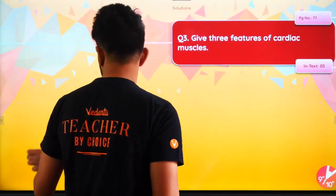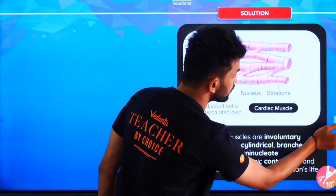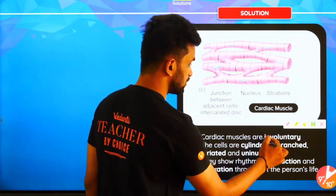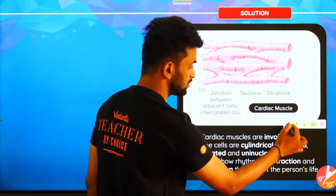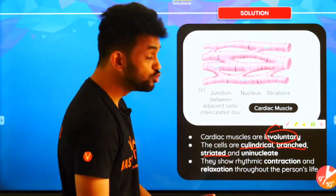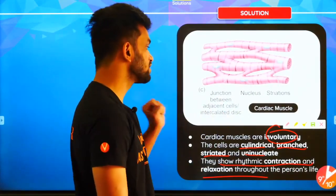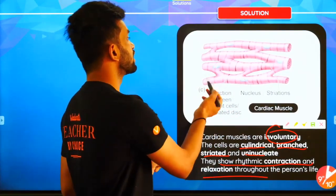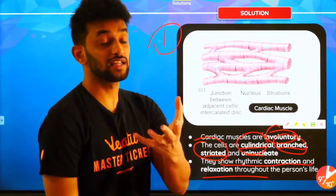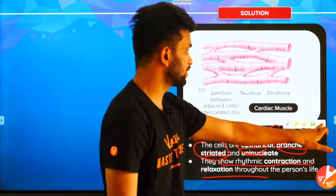Cardiac muscles are involuntary in nature — you cannot control them. They are cylindrical, branched, and striated, and uni-nucleate — they have only one nucleus. They show rhythmic contraction and relaxation. So you should write: involuntary; cylindrical, branched and striated with alternate dark and light bands; and rhythmic contraction and relaxation. This is a more holistic answer.